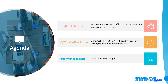For today's session, there are three parts I'd like to share with you. First is about AI uses in enterprise — I will explain the AI and machine learning landscape in enterprise, including AI use cases in different verticals, different function teams, and the pain points they may face. The second part covers the NVAIE solution, with QCT's disaggregated and containerized infrastructure design. The last part is about performance insights, including AI inference tests and interesting findings.